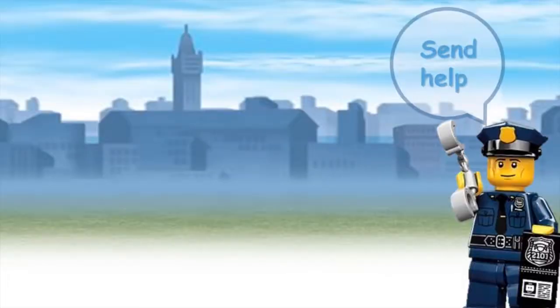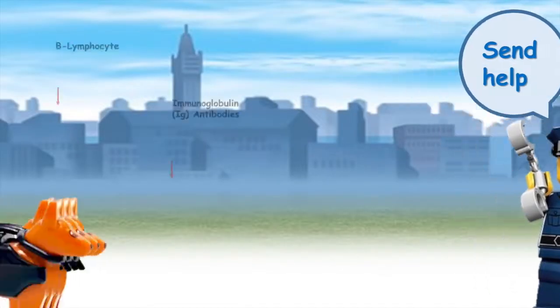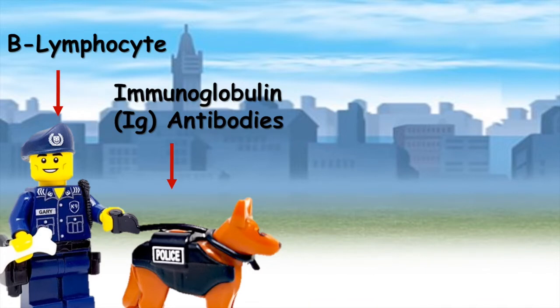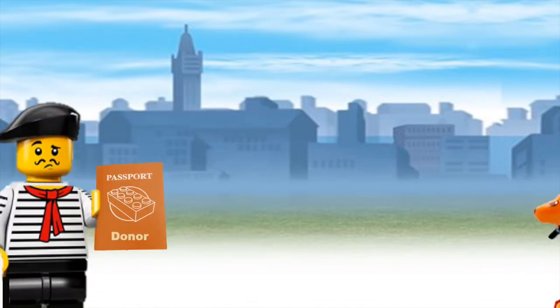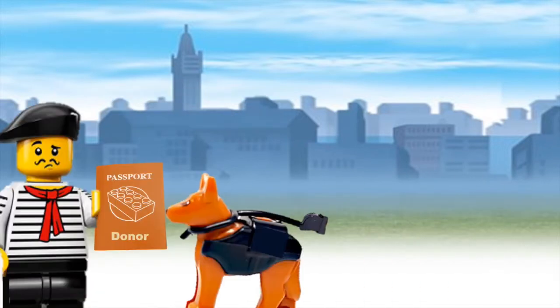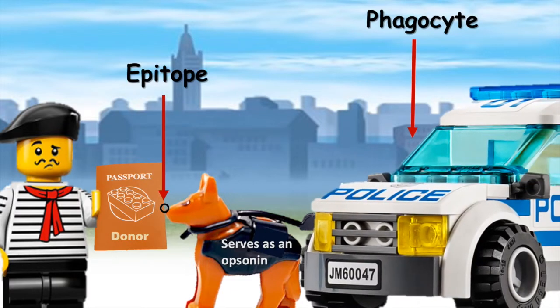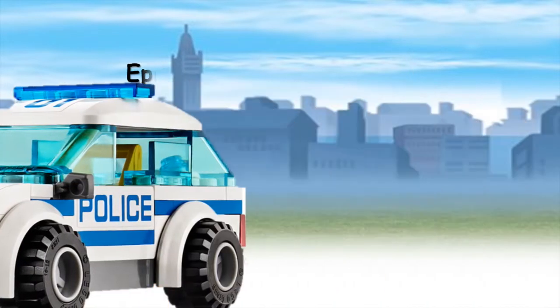In our analogy, the police officers call in the help of police dog handlers, who, when summoned, release many police dogs. These dogs attach themselves to the passport in a certain location known as an epitope, and serve as an opsonin — basically marking the foreigner as something that needs to be swallowed up by a phagocyte, or police car.